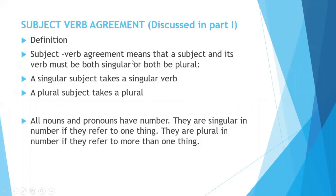In the last lecture — part one — we discussed the definition. Subject-verb agreement means that the subject and its verb must both be singular or both be plural. If the subject of a sentence is singular, then the verb will also be singular; and if the subject is plural, then the verb will also be plural. All nouns and pronouns have number: if they are singular as a subject, the verb will be singular; if plural, the verb will be plural.